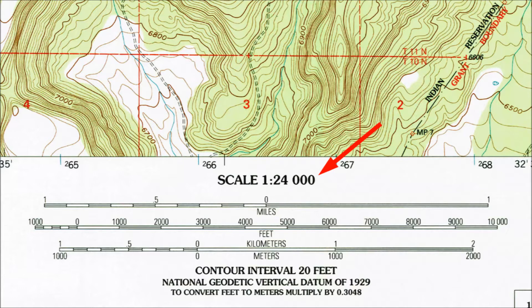I'm bringing up statements of scale so I can warn you to avoid using them. On this map, two waypoints that are three inches apart are 24,000 times three inches apart in the real world, divided by 12 for feet or 36 for yards, divided by either 5,280 or 1,760 for miles. Maybe you can do that math in your head without making a mistake, but I can't. Also, the scale statement is true for the original map but not necessarily for a copy — if you're using a reduced or enlarged version, the original scale statement is no longer true, because the ratio of map distances to real world distances changes when you resize a map.